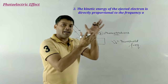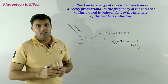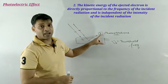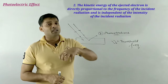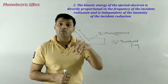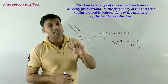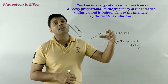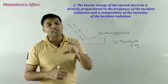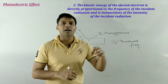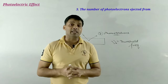The ejected electrons carry some kinetic energy with them. The second observation was that the kinetic energy of these ejected electrons depends upon the frequency of the incident radiation. The kinetic energy of the ejected electron is directly proportional to the frequency of the incident radiation and is independent of the intensity. So higher frequency light means electrons are ejected with greater kinetic energy — but more frequency does not mean more electrons are ejected.